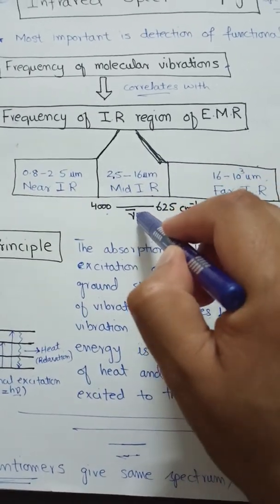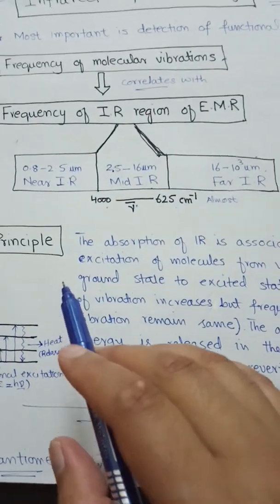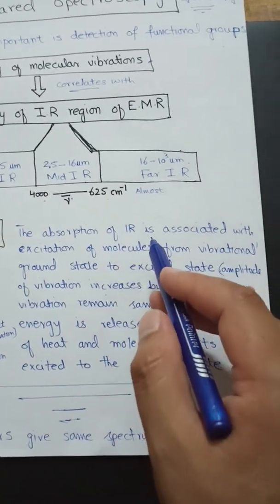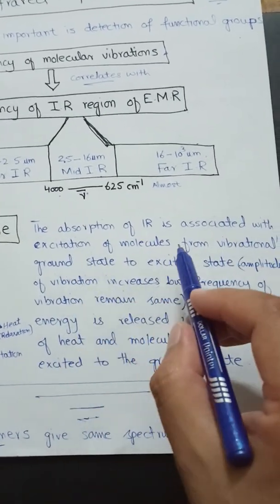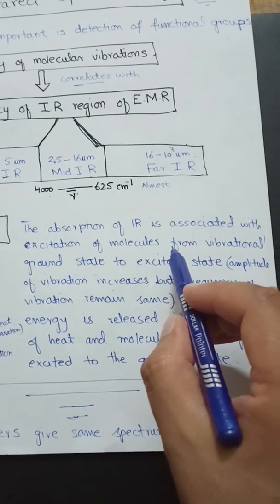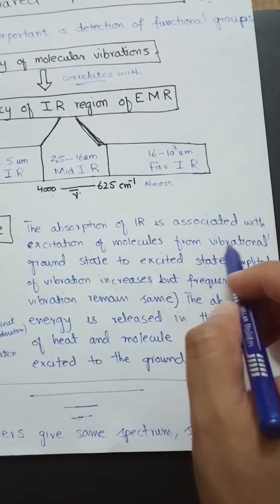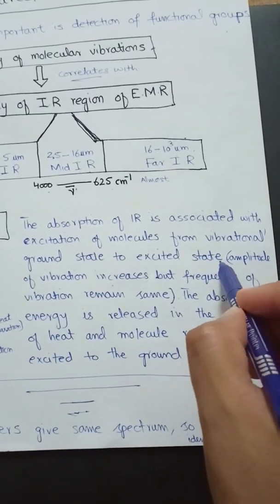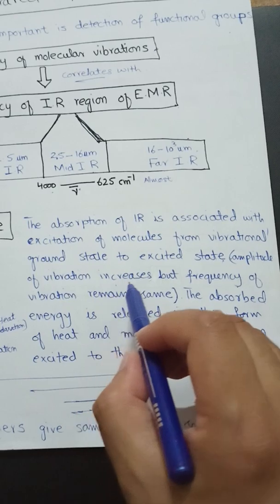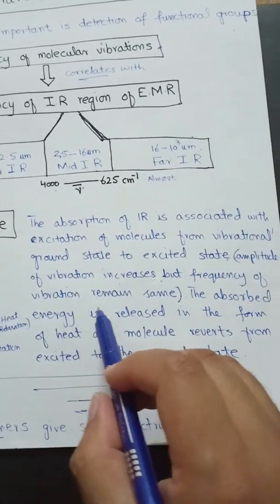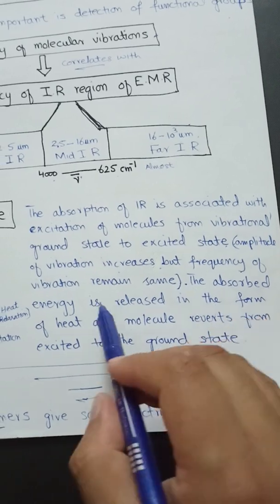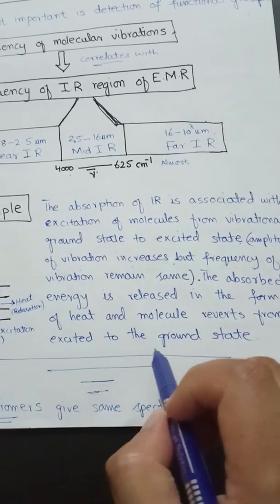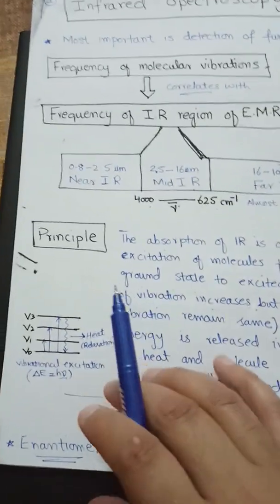The principle of IR spectroscopy is that absorption of infrared radiation is associated with the excitation of molecules — excitation occurs from the vibrational ground state to the vibrational excited state. During this, the amplitude of vibration increases but the frequency of vibration remains the same. The absorbed energy is released in the form of heat and the molecule reverses back from the excited state to the ground state.